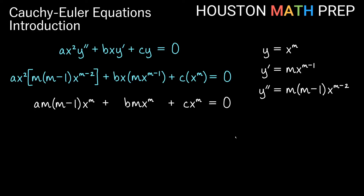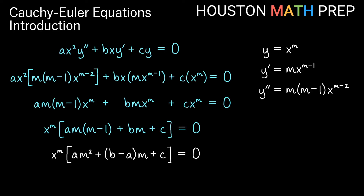The cy term is already x to the m, so we have c times x to the m equals zero. Now x to the m is a common factor we can factor out entirely, giving us x to the m times the quantity a·m(m minus one) plus bm plus c. After distributing and combining like terms, we get am squared plus (b minus a)m plus c equal to zero. To find solutions, we solve this equation for m — our new characteristic equation for Euler equations.